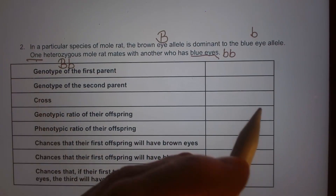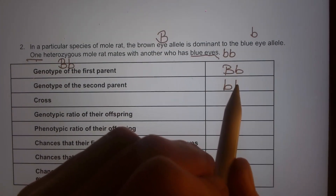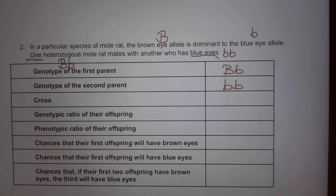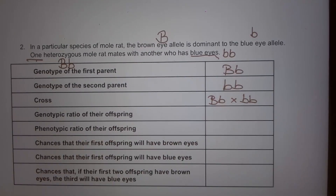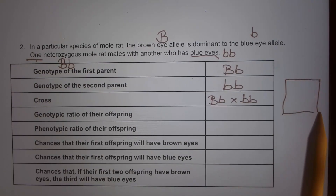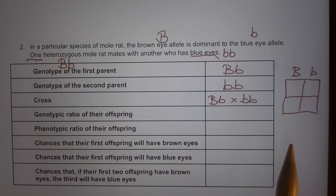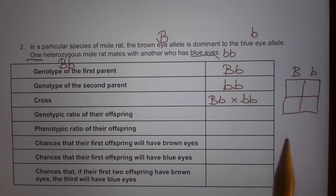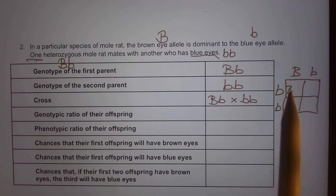The first parent's genotype is capital B lowercase b, and the second parent's genotype is lowercase b lowercase b — that's why it has blue eyes. We cross them: capital B lowercase b times lowercase b lowercase b. Setting up the Punnett square, the gametes for the first parent are capital B or lowercase b, and the gametes for the second parent are lowercase b and lowercase b.